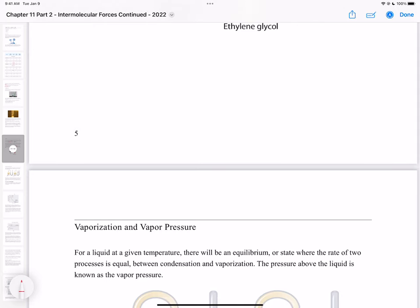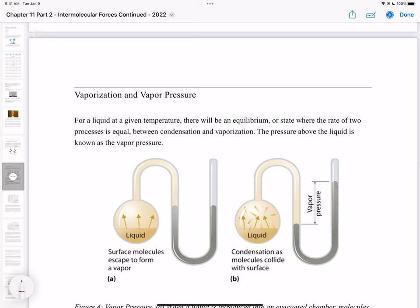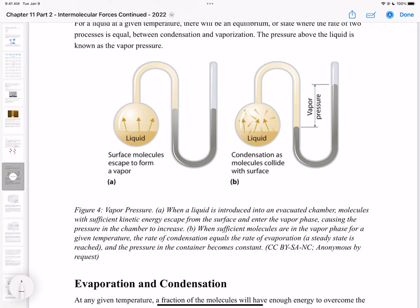Let's talk about vaporization and vapor pressure. For a liquid at a given temperature, there will be an equilibrium where the rate between condensation and evaporation is equal. In a closed system, we can measure the pressure above the liquid, called the vapor pressure. Liquid molecules will escape to form a vapor, and when the vapor collides back with the surface, it condenses back into liquid.